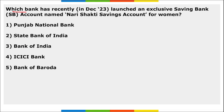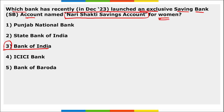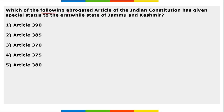Bank of India recently launched an exclusive savings bank account named Nari Shakti Saving Bank Account for women. It is specifically for women above the age of 18 with an independent source of income. Article 370 of the Indian Constitution, which gave special status to Jammu and Kashmir, was abrogated. The Supreme Court of India upheld the abrogation of Article 370 by presidential order on 5th August 2019.